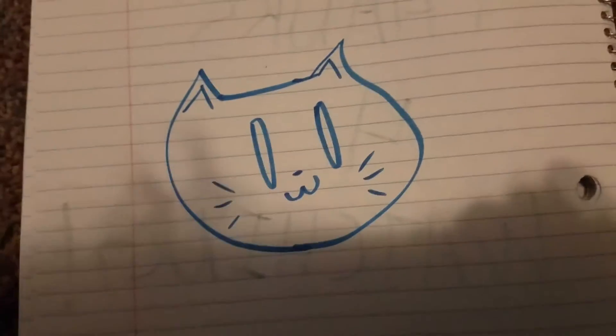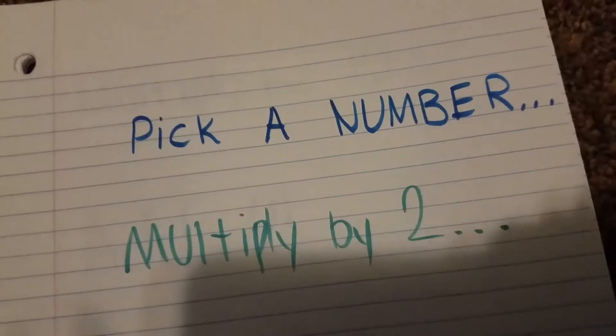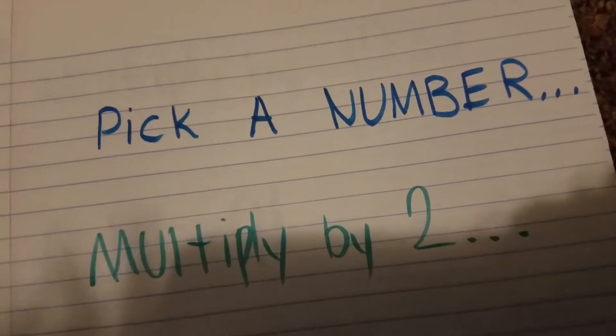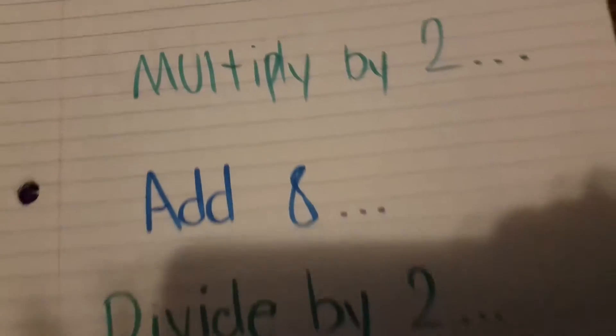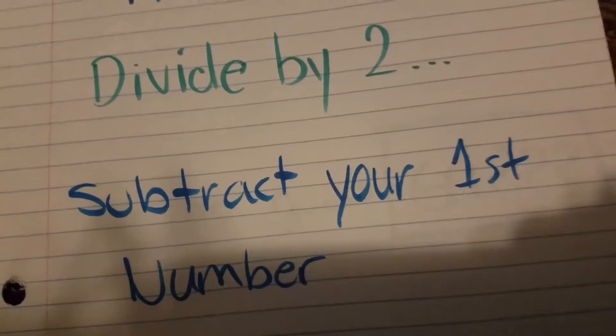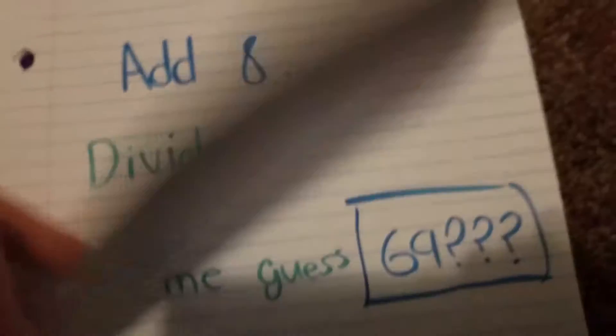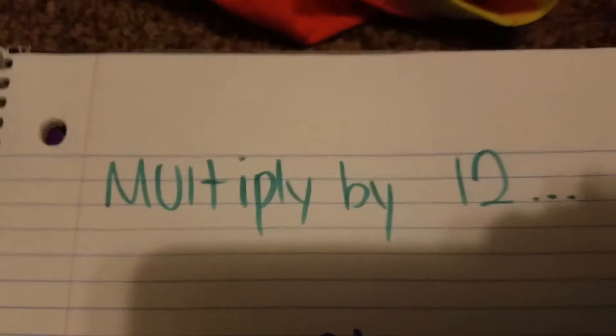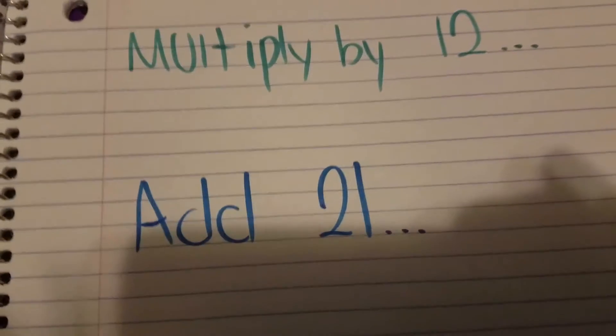So basically, you pick a number, then multiply by 2, then add 8, divide by 2, subtract your first number from the number that you have now, multiply by 12, then add 21.